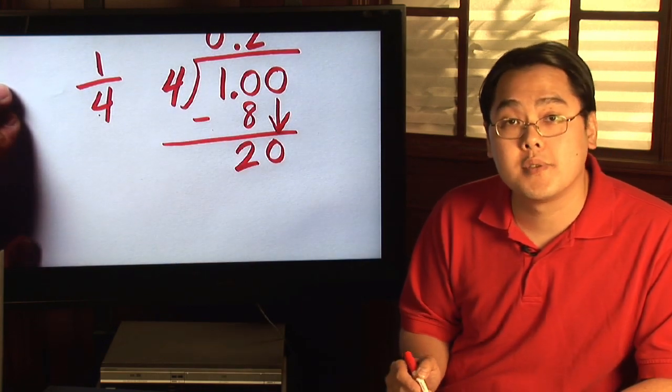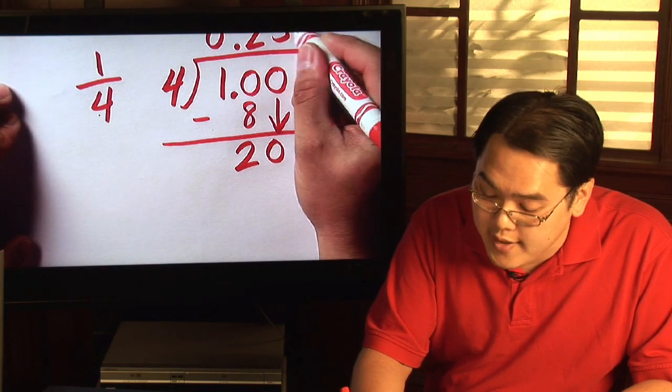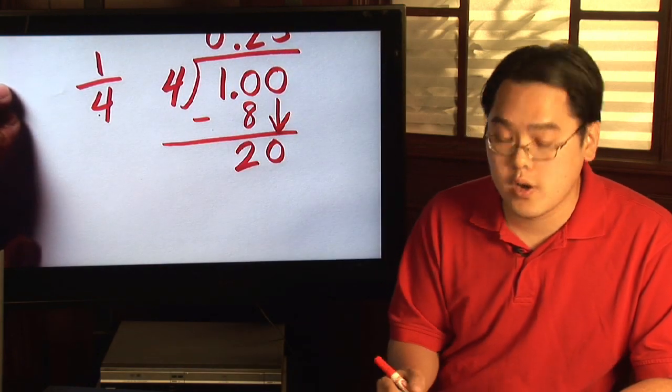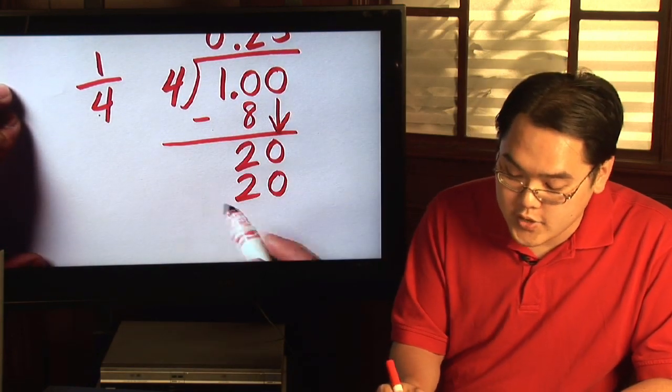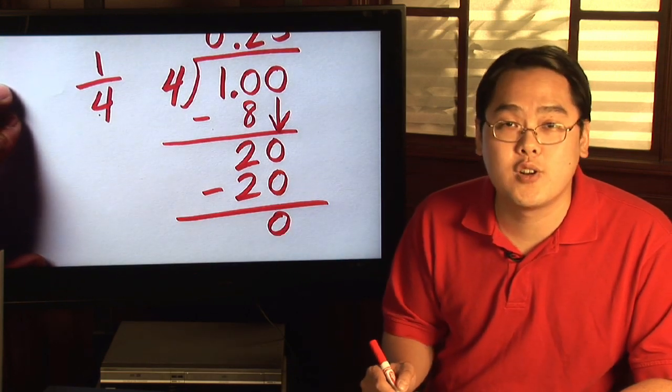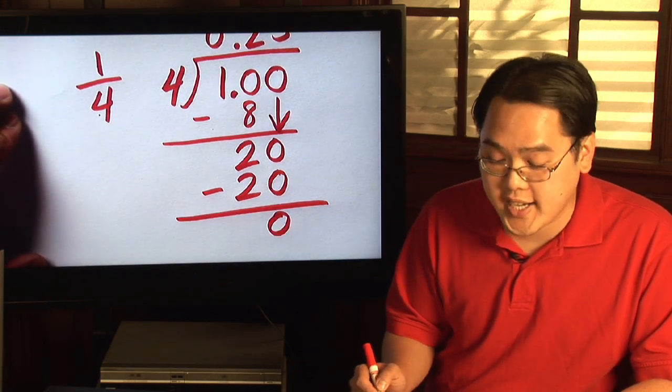Four goes into twenty how many times? As you know, that's going to be five. And then five times four is going to give you twenty. Do the subtraction again and you'll see that you have a remainder of zero and as a result you have an exact answer.